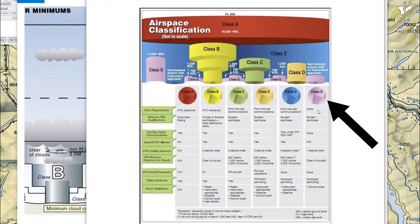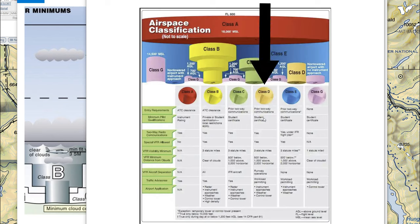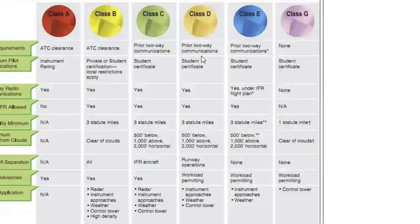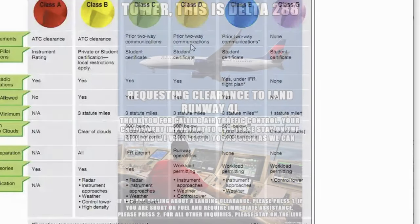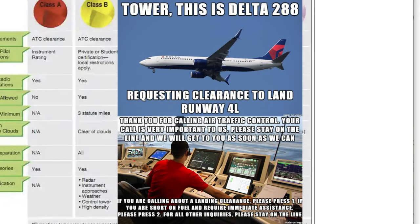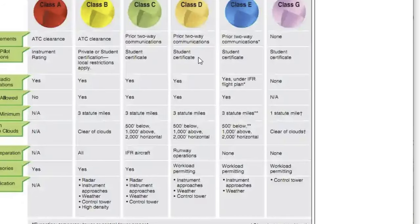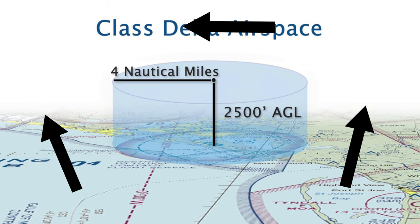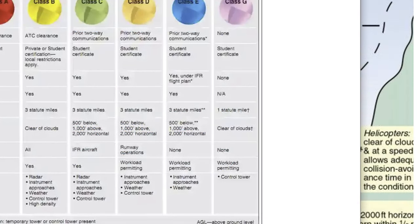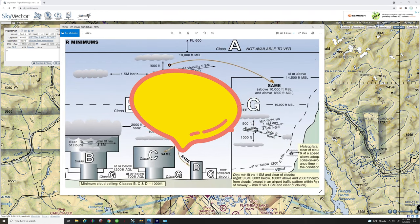In Class G airspace, entry requirements are minimal — essentially none. But as we transition from Class G to Class D airspace, there are additional requirements. The key requirement for Class D is two-way communications before entering the airspace. You must get on the radio, tell them who you are, where you are, and what you intend to do. If they give you a standby, you must remain outside the airspace until they acknowledge you. Today we'll be using live ATC.